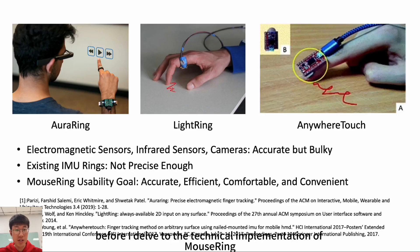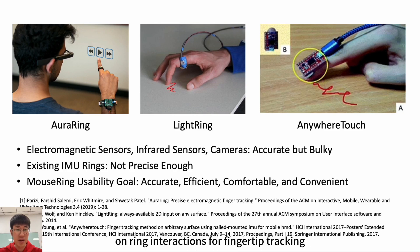Before I delve into the technical implementation for MouseRing, let's take a brief look back at previous work on ring interactions for fingertip tracking. Several projects have been undertaken to realize pointing input with finger-shaped devices. For example, FingerPing and AuraRing utilize multiple electromagnetic sensors to position the fingertip relative to the wrist nodes, thereby supporting in-air pointing for target selection.